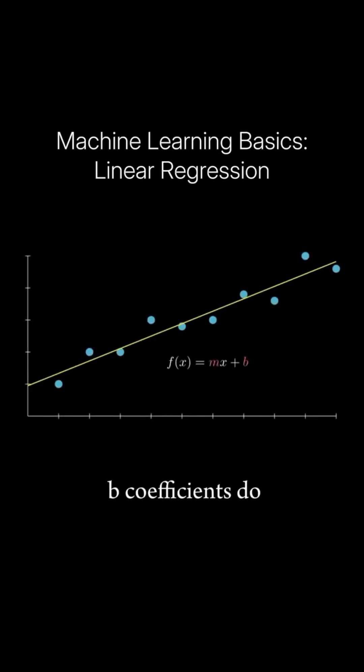So what do the m and b coefficients do? The m or beta 1 coefficient controls the slope of the line. The b or the beta 0 controls the intercept of the line.